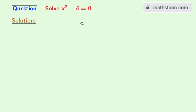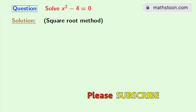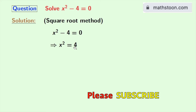To solve the equation, we will use the square root method firstly. This is our given equation. Now shifting 4 to the right hand side, we get x squared is equal to 4.